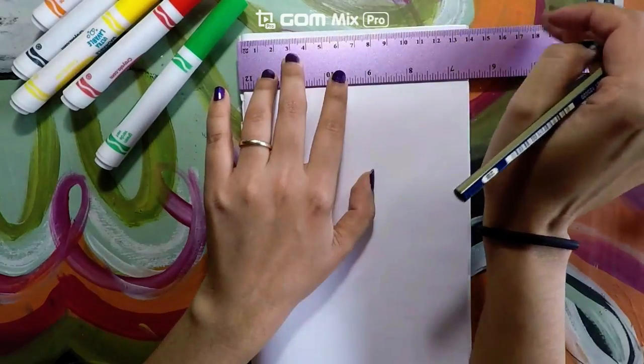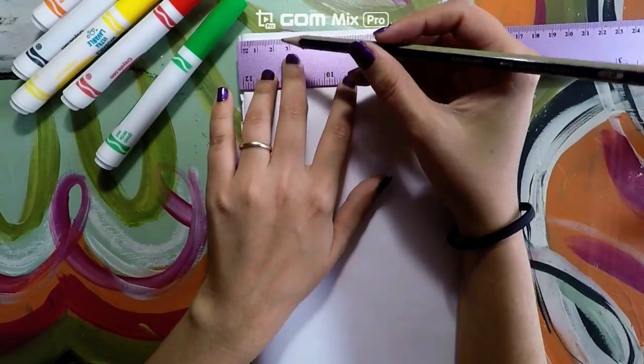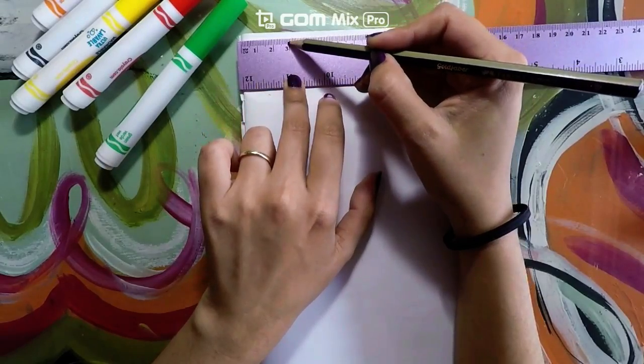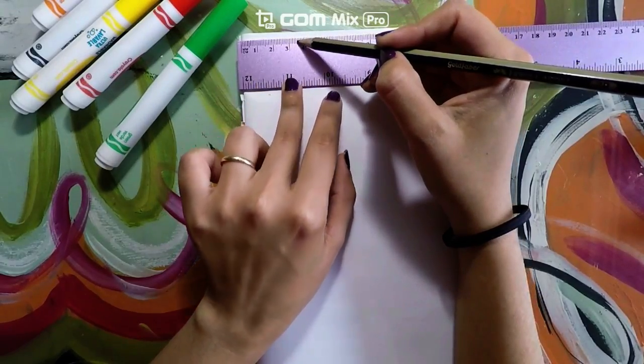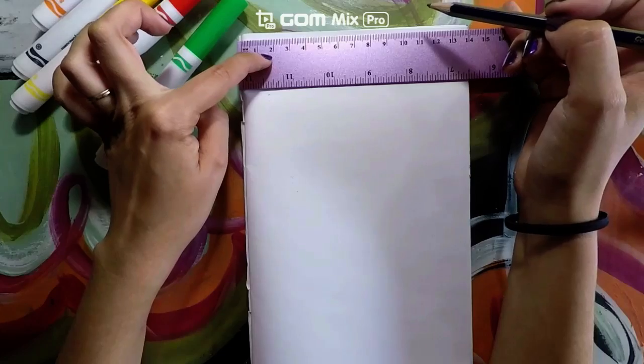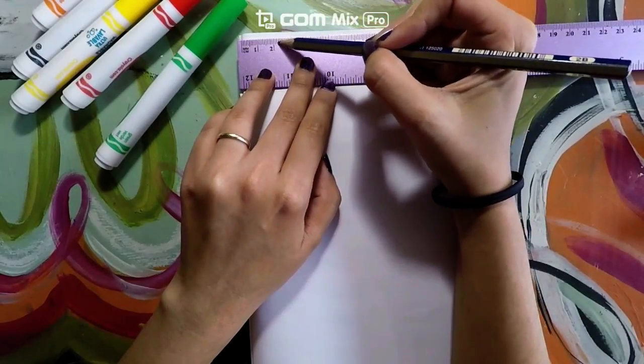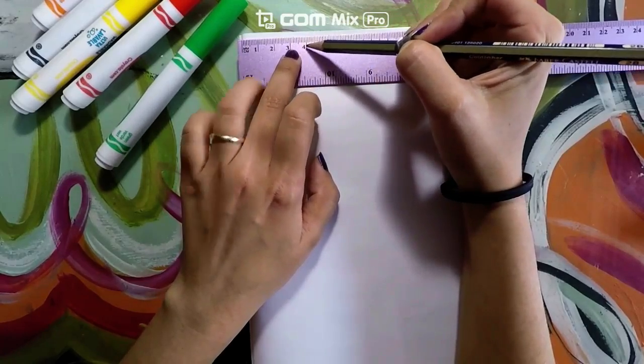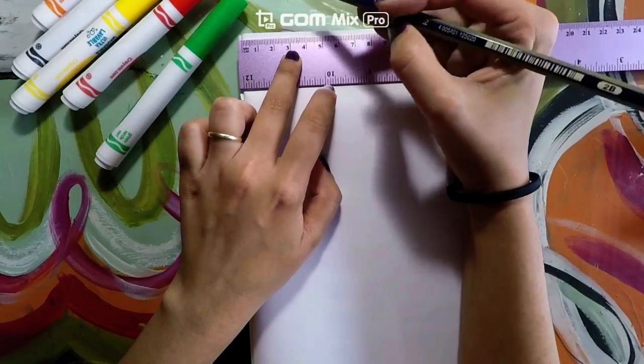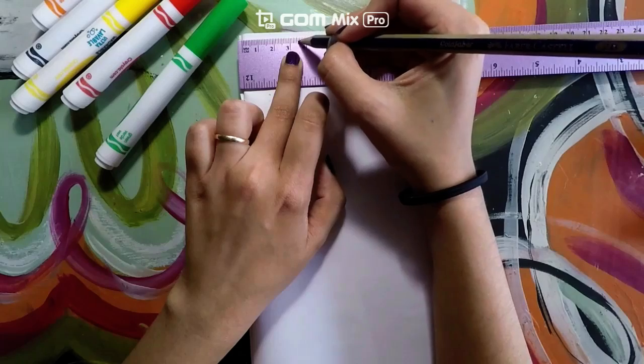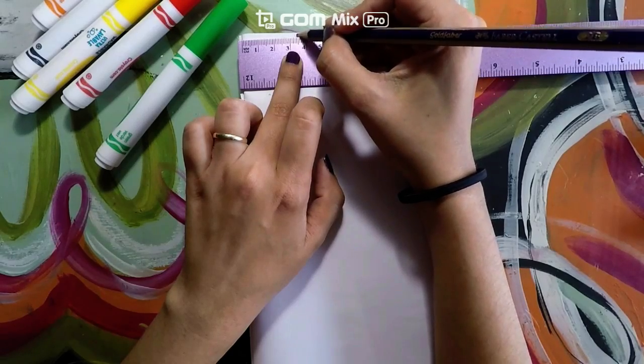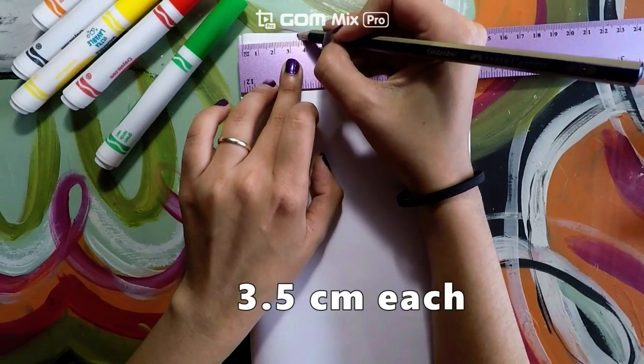What I am going to measure is three and a half centimeters. So I will go ahead and go to one, two, three centimeters. And now I am going to do half of this centimeter, which will be 3.5 right here in the middle. I am going to make a little line right here.